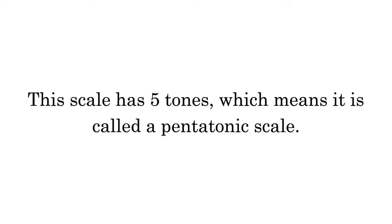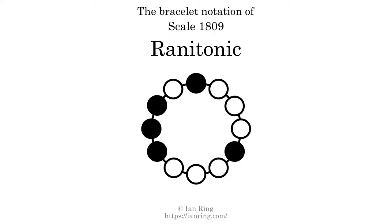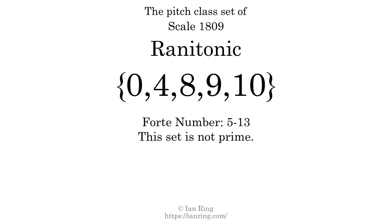This scale has 5 tones, which means it is called a pentatonic scale. This is a bracelet notation diagram of scale 1809. The shaded circles represent tones that appear in the scale, and they are read clockwise, starting at the top. The pitch class set for this scale is 0, 4, 8, 9, 10.